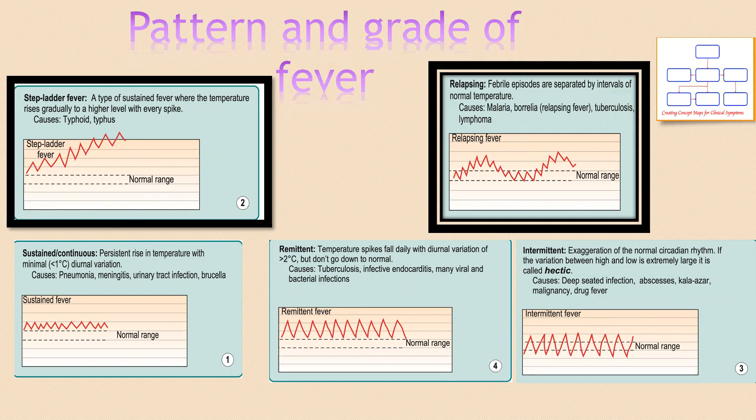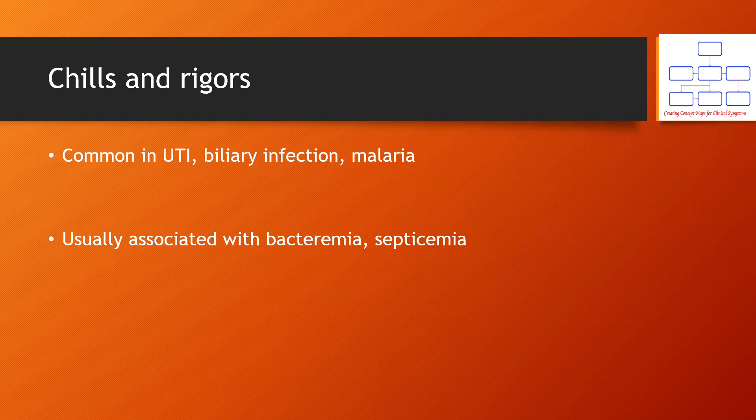Out of all the questions we can ask about fever, the pattern or grade of fever can often be quite useful, especially if you can plot that information down in a chart. Not always, but sometimes we may come across the classical textbook picture of the stepladder fever of typhoid, or the tertian fever of Plasmodium falciparum, or the quartan fever of Plasmodium malariae. The presence of chills and rigors can mean the presence of microbes or toxins produced by them in the bloodstream, and are often part of the symptoms caused by urinary tract infections, pulmonary sepsis, or sometimes malaria.